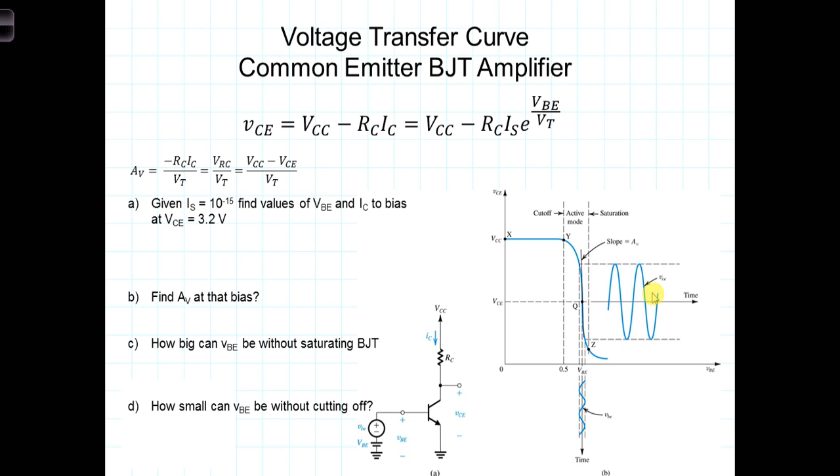We now understand that the base-to-emitter voltage is the controlling quantity in BJTs, and that there's an exponential dependence on VBE. We've seen that I sub C, the current effectively through the transistor, is equal to I sub S times E to the VBE divided by V sub T.